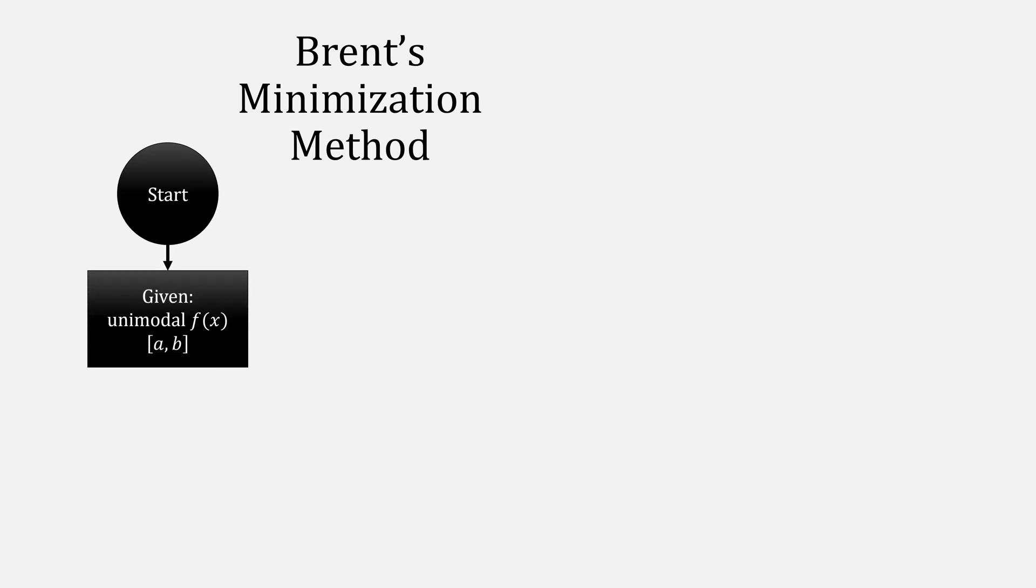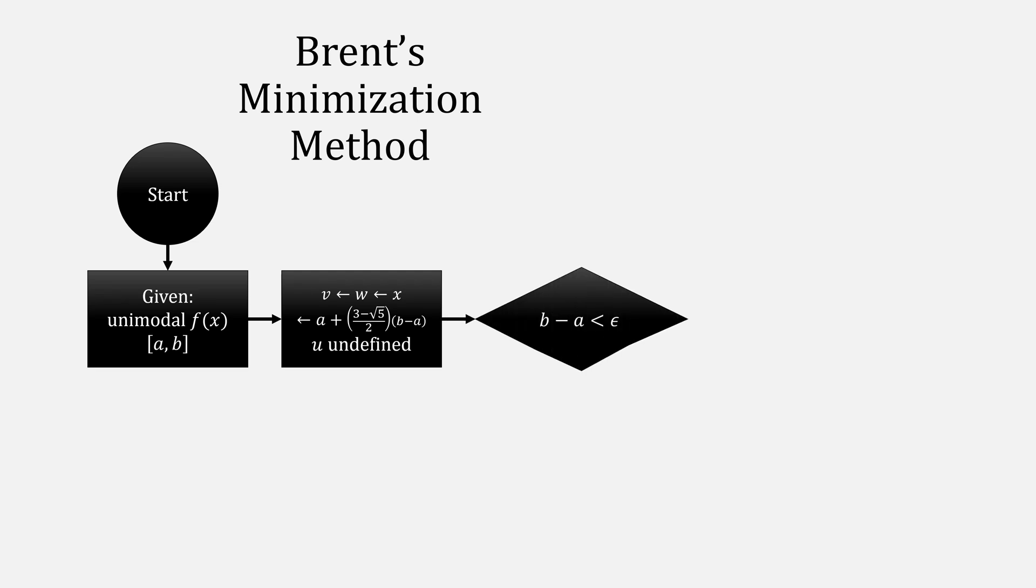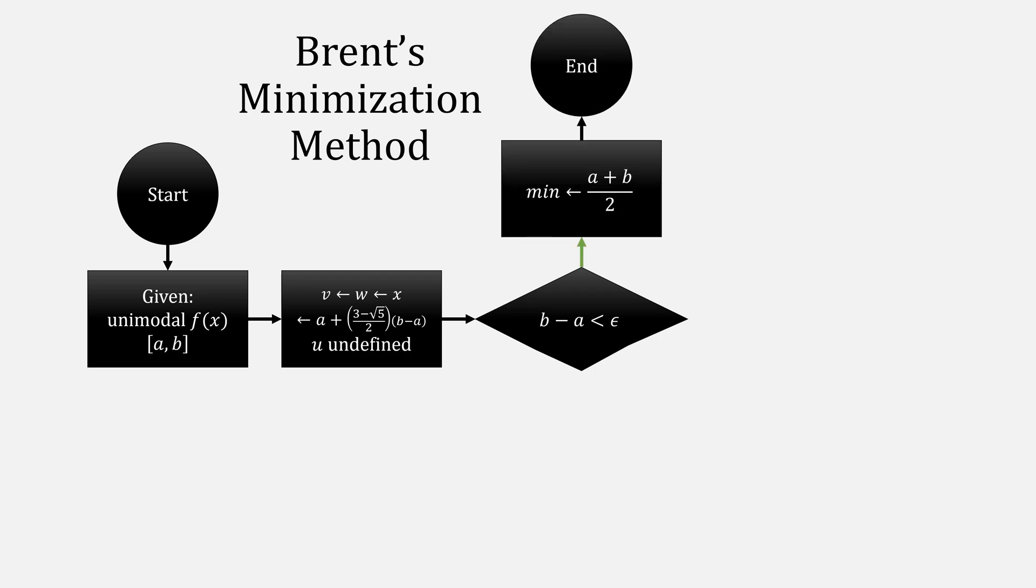Our algorithm for Brent's minimization looks like this. From our start, given a unimodal function f that has an interval a, b, we initialize our values for v, w, and x from this function, leaving u undefined. Then, check if b minus a is less than our epsilon. When it is, that's our minimum. We can return a plus b over 2 and stop.